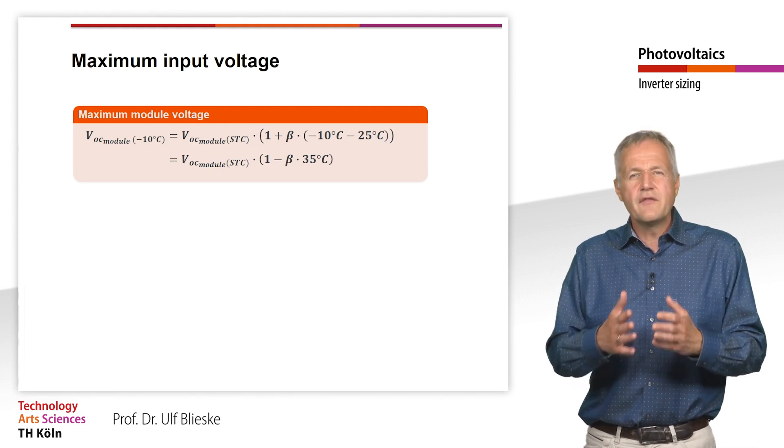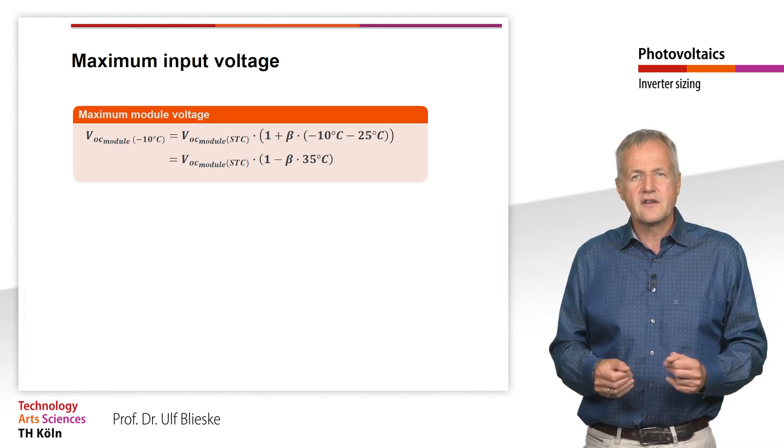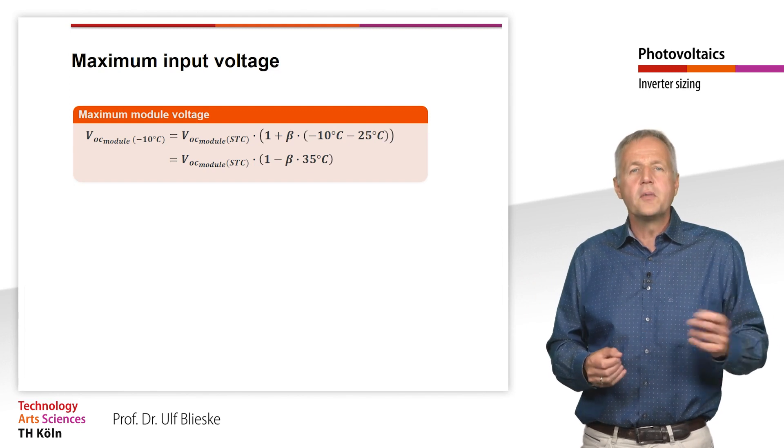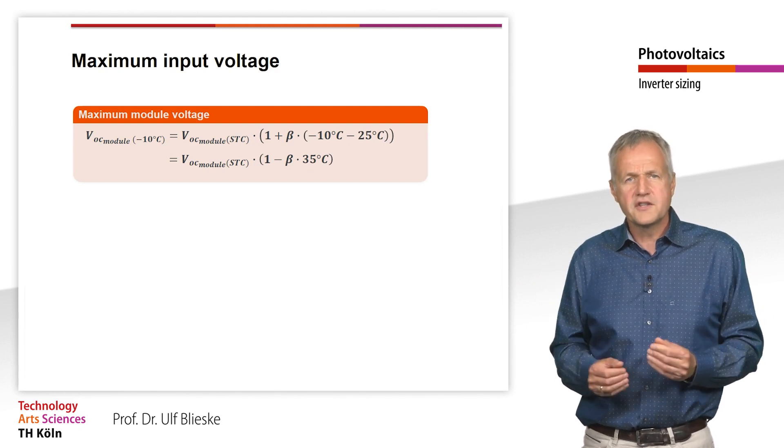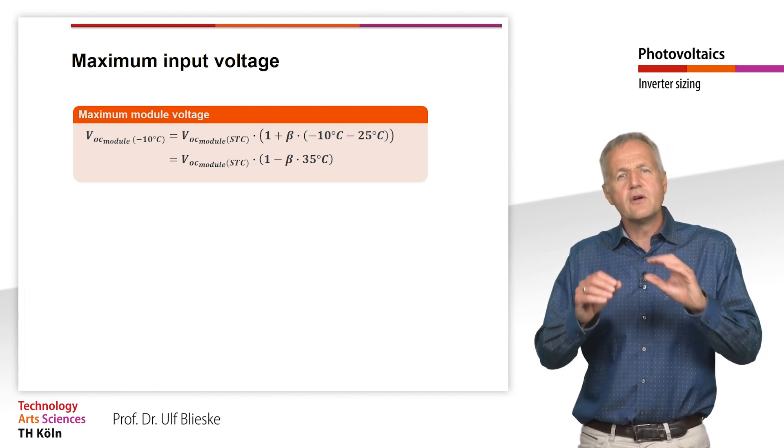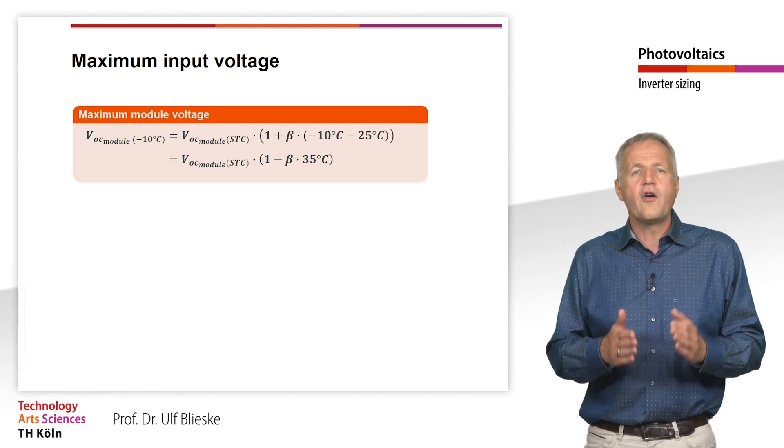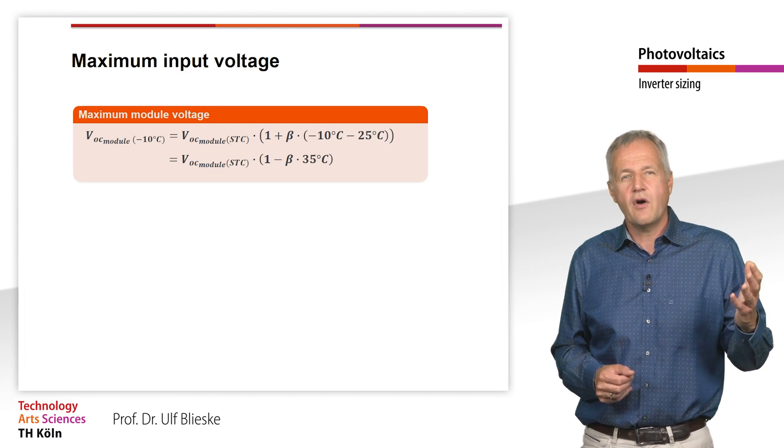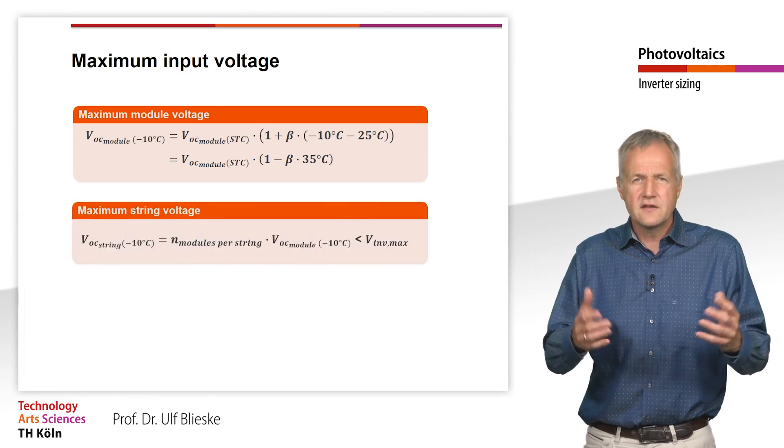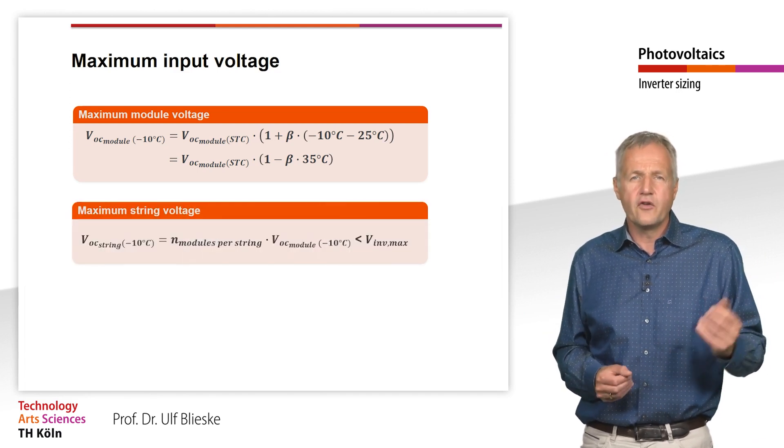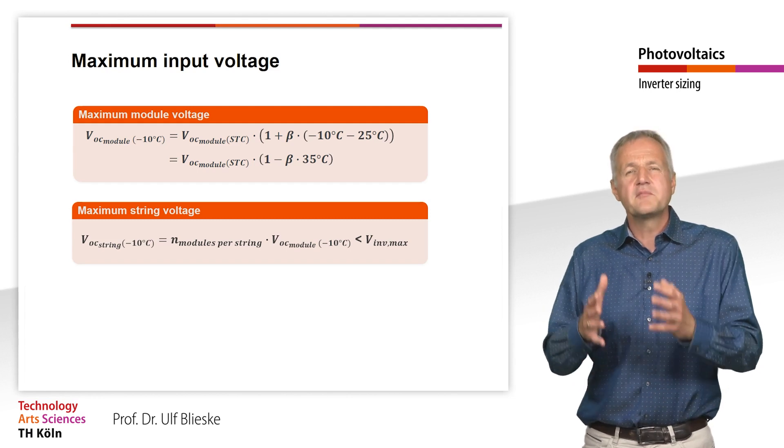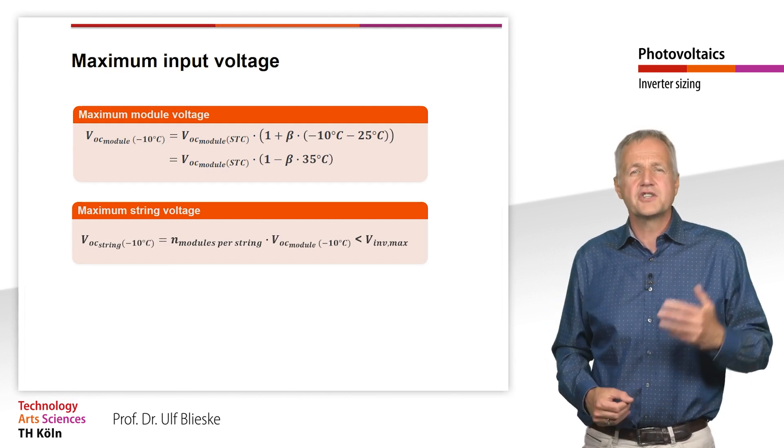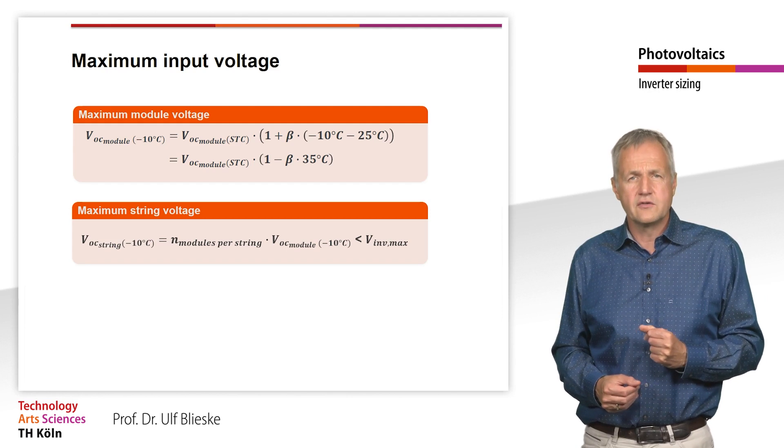In practice, however, several modules are connected in series, in a string. The open circuit voltage of the solar generator is then equal to the number of solar modules connected in series multiplied by the open circuit voltage for one module. Thus, the maximum permissible input voltage of the inverter must at least be larger than this value.